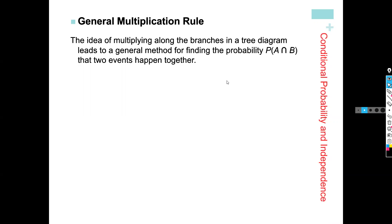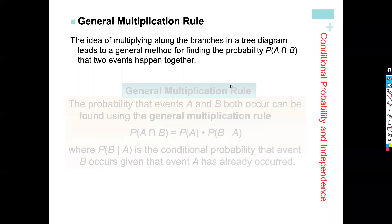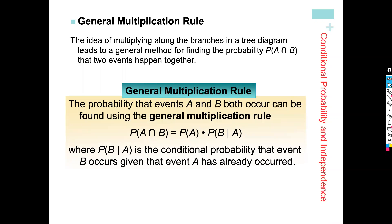We left off talking about conditional probability and the probability of A and B happening together. We need A to happen, and we need B to happen at the same time. That's why P(B|A) is in the formula — we need both A to happen, and given that A happens, we also need B to happen. That's how B given A covers it.